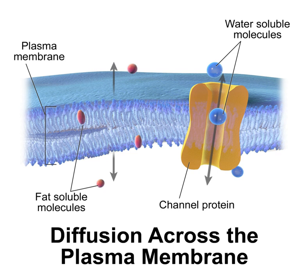3. Endocytosis. Endocytosis is the process in which cells absorb molecules by engulfing them. The plasma membrane creates a small deformation inward called an invagination, in which the substance to be transported is captured. This invagination is caused by proteins on the outside of the cell membrane acting as receptors and clustering into depressions, eventually promoting accumulation of more proteins and lipids on the cytosolic side of the membrane. The deformation then pinches off, creating a vesicle containing the captured substance. Endocytosis is a pathway for internalizing solid particles (phagocytosis), small molecules and ions (pinocytosis), and macromolecules, and requires energy, making it a form of active transport.